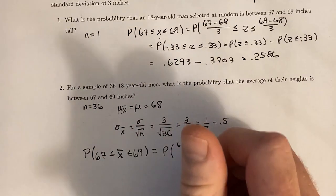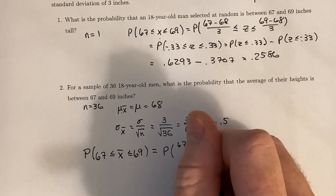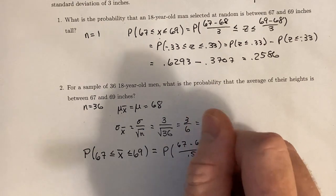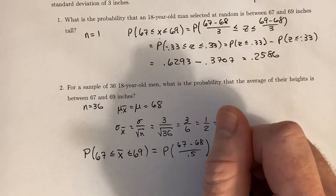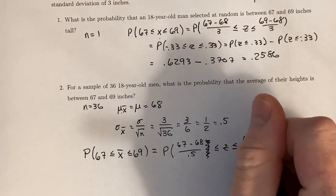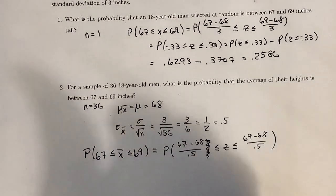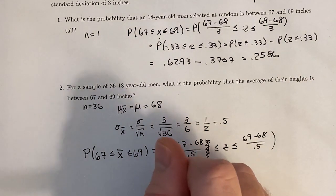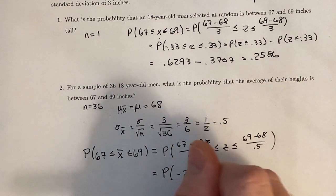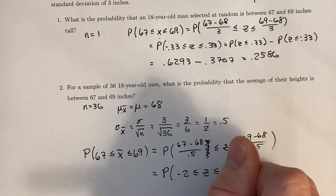That's going to be the probability. Again, convert it to z-scores. Less than or equal to z, less than or equal to 69 minus 68 over 0.5. And that gives us probability of negative 2 less than or equal to z, less than or equal to positive 2.